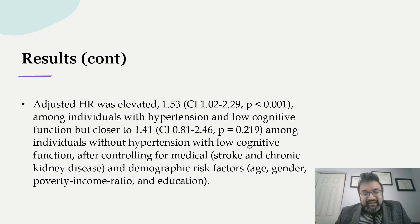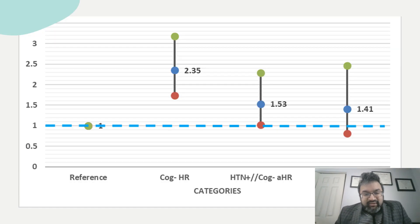I'm going to explain this slide visually. When looking at cognitive dysfunction, as I mentioned, there is a 2.35 times higher likelihood of mortality than individuals who do not have cognitive dysfunction. When looking at individuals with both hypertension and cognitive dysfunction, it is 1.53 — or 53% higher likelihood of mortality. When looking at cognitive dysfunction but no hypertension, this drops down to 1.41, and it is no longer statistically significant.